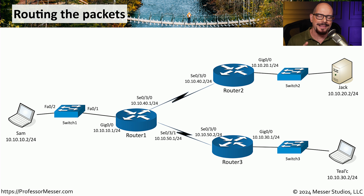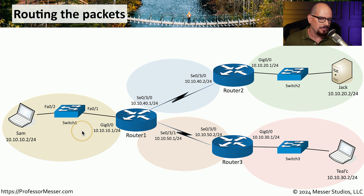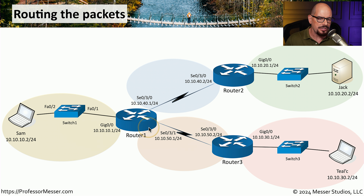Let's look at this network diagram. There are three separate routers in this network diagram, and three individuals that would like to communicate with each other. Let's focus on router 1. You can see router 1 is connected to three different subnets. We have a subnet 10.10.10.0/24. There's another subnet between router 1 and router 2 that is the 10.10.40 network, and then another subnet between router 1 and router 3 — that's the 10.10.50 subnet.